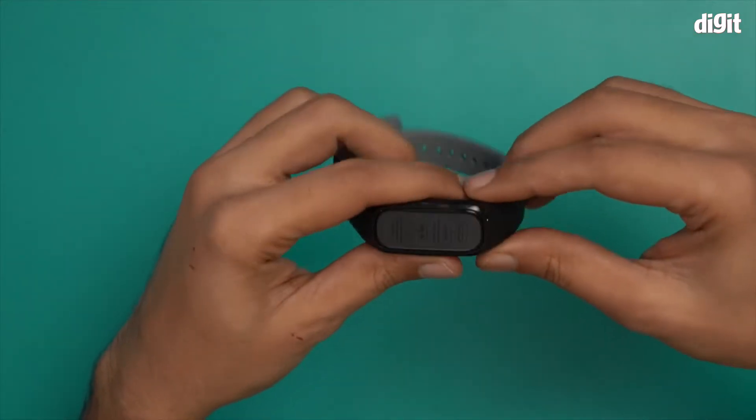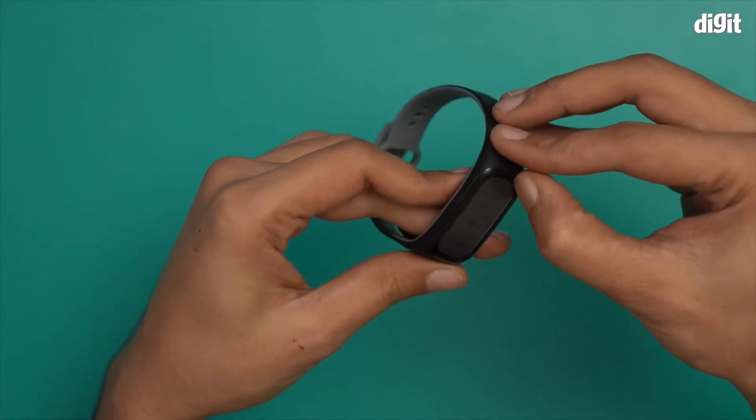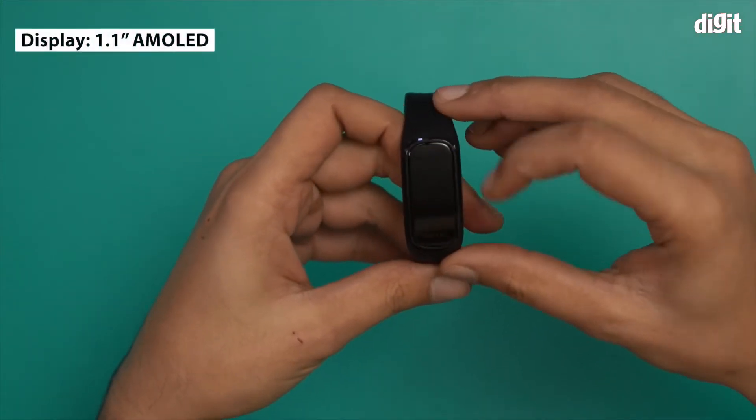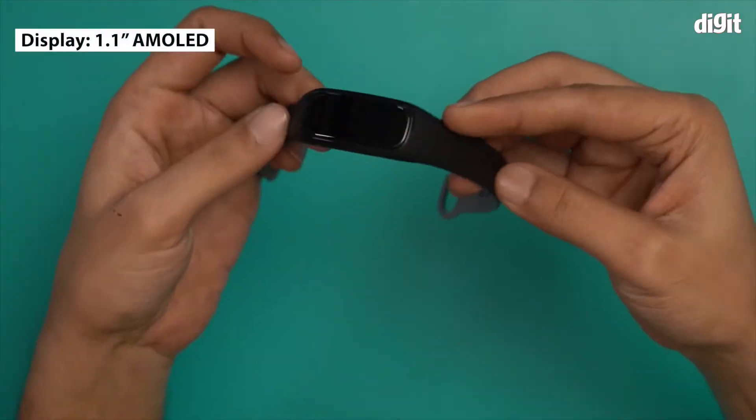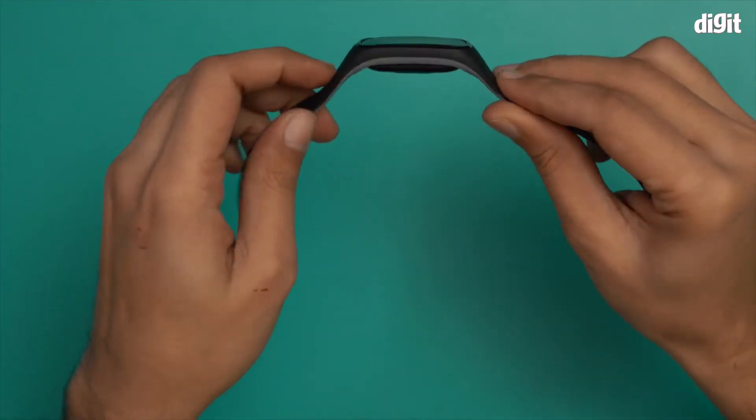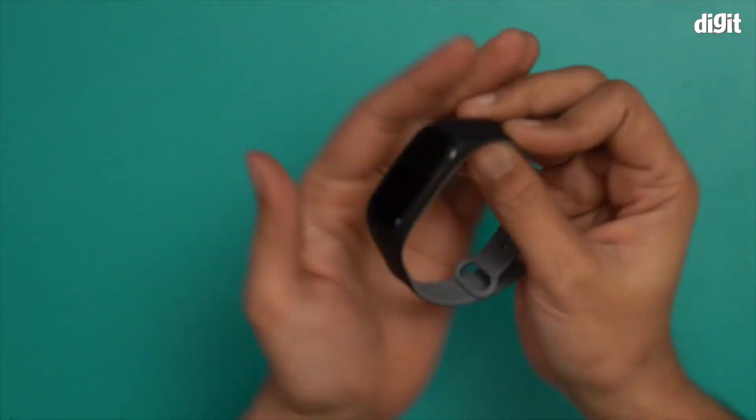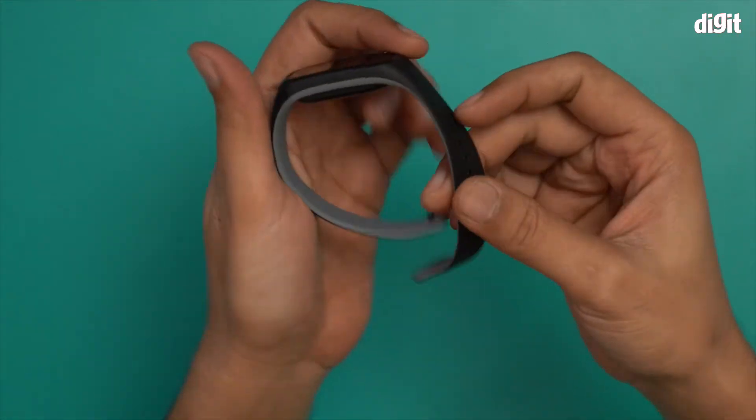So this is the OnePlus band. I will remove the protective sticker. You'll notice this is the 1.1 inch AMOLED display. It has a matte finish, not just matte black but a grey and black color scheme.